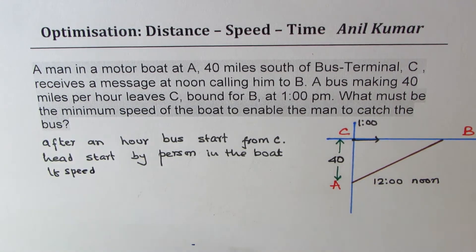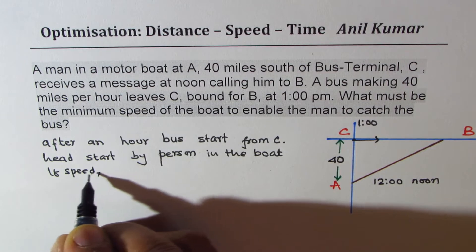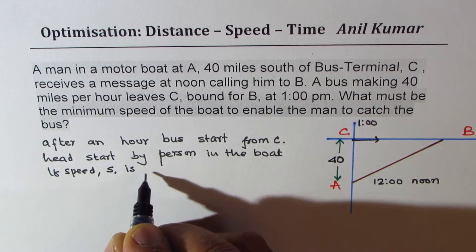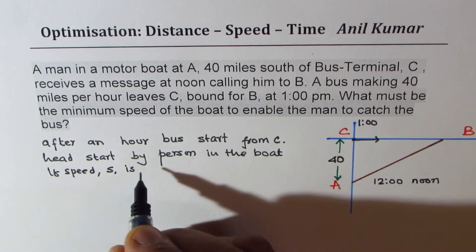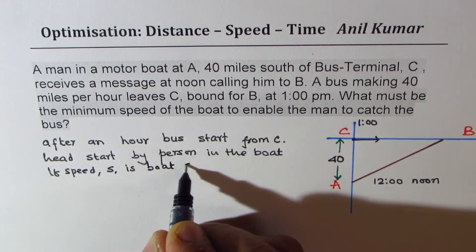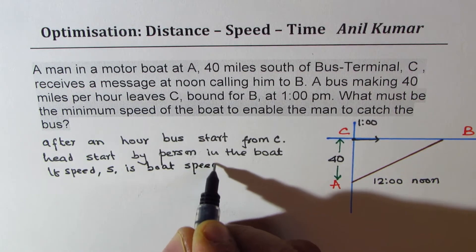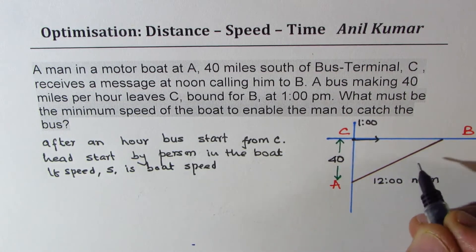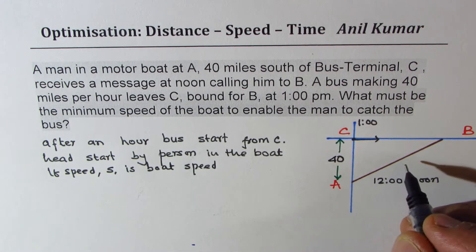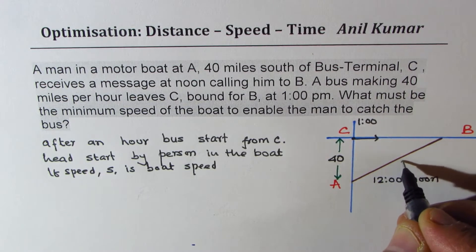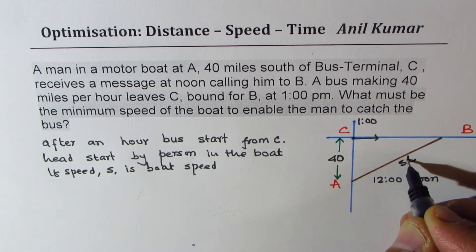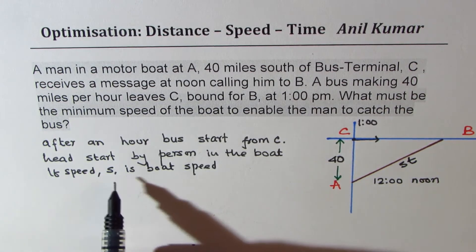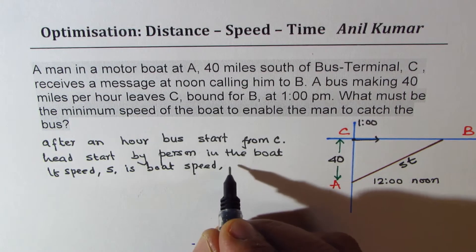That really means that if speed of boat is, let's say s, if speed s is boat speed, and it takes t time to reach somewhere along this path, then A to B will be s times t, where s is the speed and t is the time.